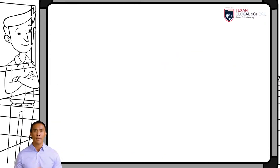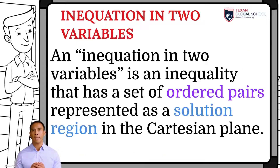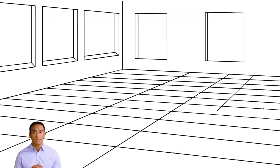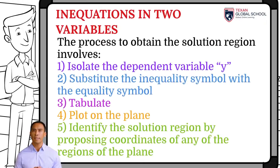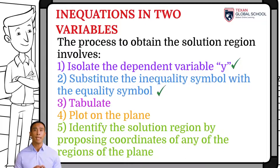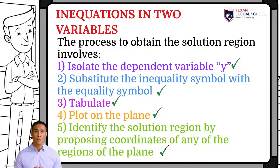An inequation in two variables is an inequality that has a set of ordered pairs represented as a solution region in the Cartesian plane. The process to obtain the solution region implies isolating the dependent variable y. Then, we must momentarily replace the symbol of inequality with that of equality. We tabulate to plot on the plane. Finally, we have to identify the solution region by proposing coordinates of some of the regions of the plane.